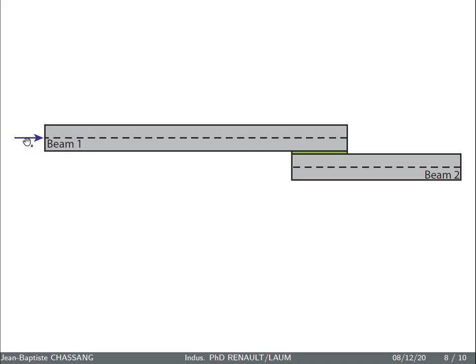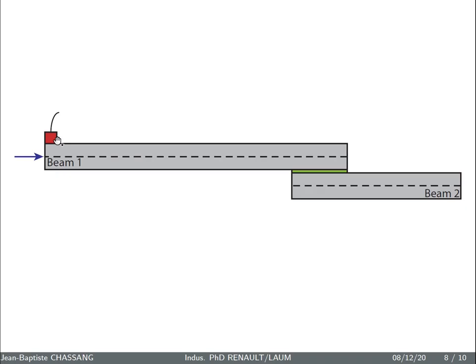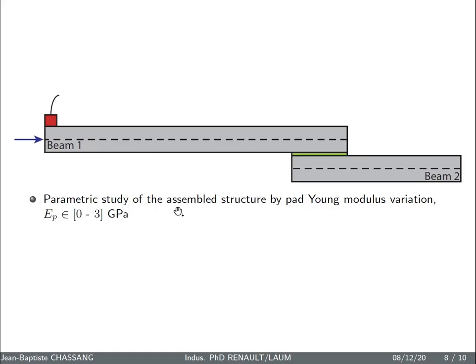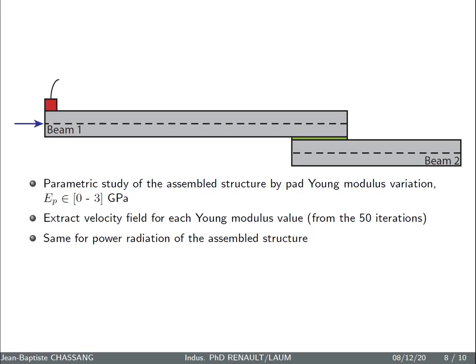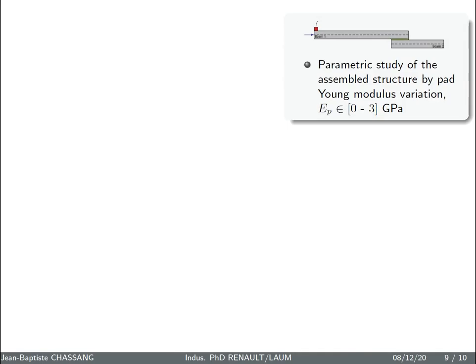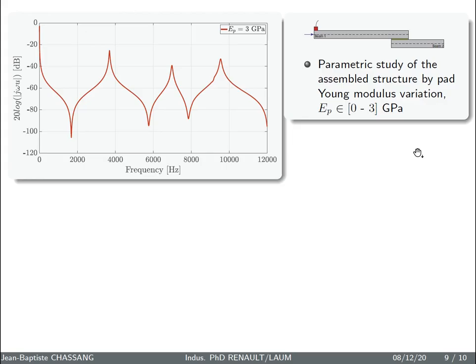So now in order to relate the junction properties on the vibro-acoustic behavior of the assembled structures, we'll have a parametric study. So we start with this assembly and an excitation, a traction excitation in the first beam. We exit at the exact same point here with an accelerometer and we use a parametric study of the assembled structures by pad Young modulus variation from 0 to 3 GPa.